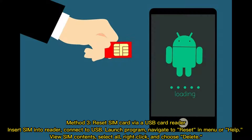Method 3: Reset SIM card via USB card reader. Insert the SIM into the reader and connect to USB. Launch the program and navigate to Reset in Menu or Help. View SIM contents, select All or a single entry, and choose Delete.